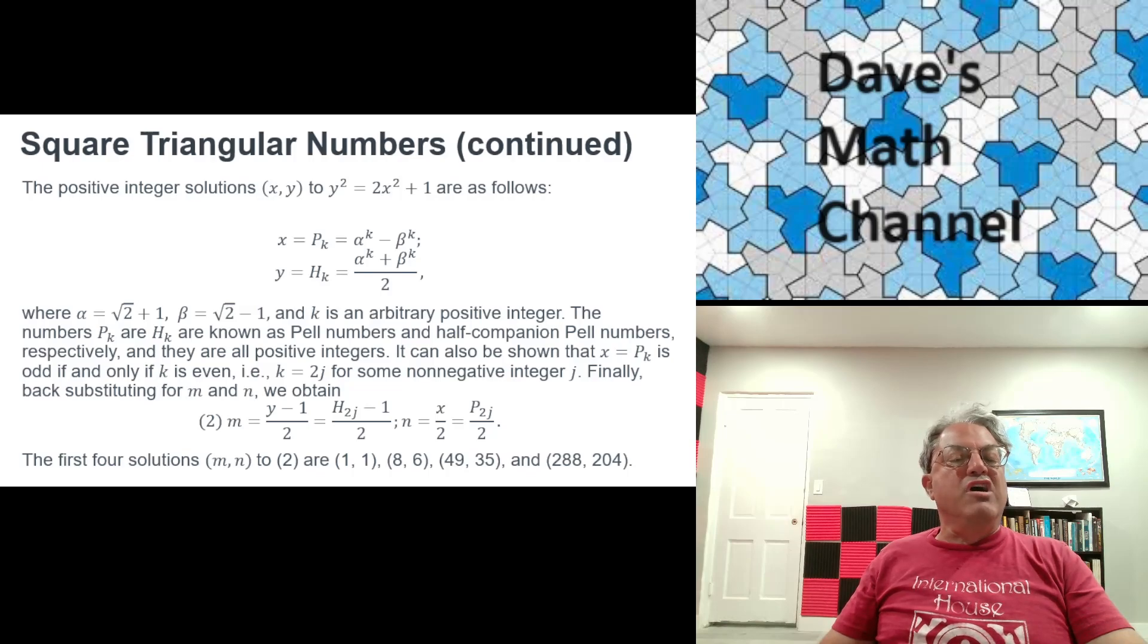Similarly, we have a formula for y. It's called the half companion Pell number, which is alpha k plus beta k over 2. It turns out that alpha k plus beta k is always an even integer, so we can divide it by 2. Alpha k minus beta k is always an integer, which we call the kth Pell number.